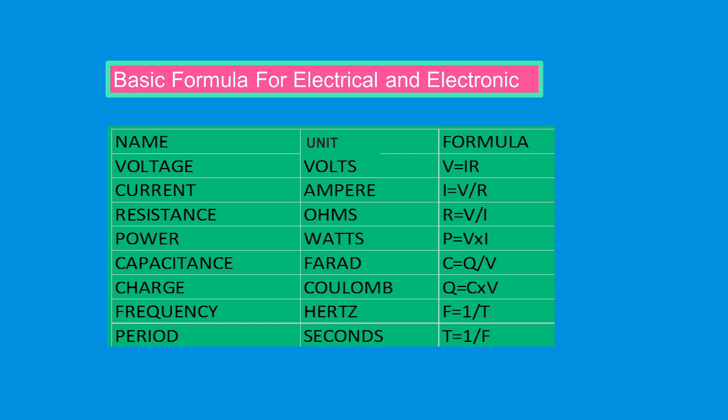Current. The unit is ampere. The formula is I equals V over R. Resistance. Ohms. R equals V over I. Let's go to the next.